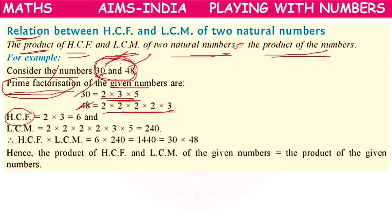Now, what is HCF? HCF is the common prime factor taken the least number of times it occurs. The word opposite to highest is least. So for finding HCF, we take the common prime factor which is occurring the least number of times. Here: 2 appears 1 time in 30 and 4 times in 48 — least is 1 time. 3 appears 1 time in each — least is 1 time. 5 appears 1 time in 30 and 0 times in 48 — least is 0, so we won't take 5.